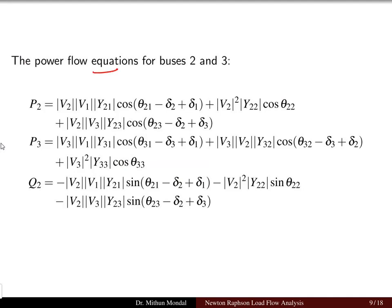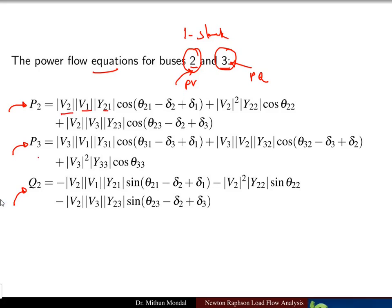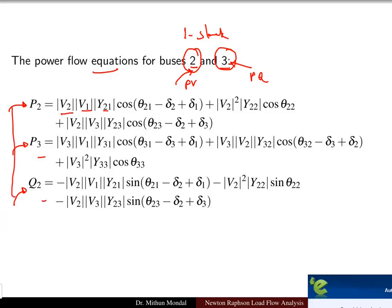Now the power flow equations for bus 2 and bus 3 — bus 1 is the slack bus, so we start from buses 2 and 3. Bus 2 is a PV bus and bus 3 is a PQ bus. We need to find P2, P3, and the reactive power Q2. The voltage terms associated with buses 2 and 3 are split using the power formula to compute active and reactive power.